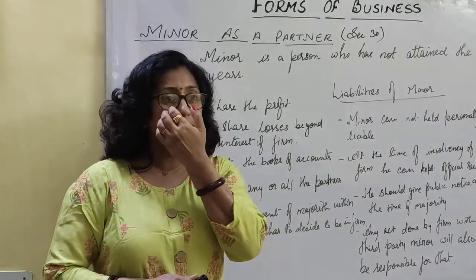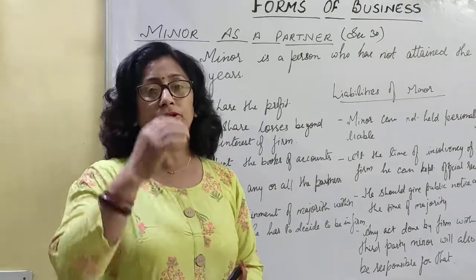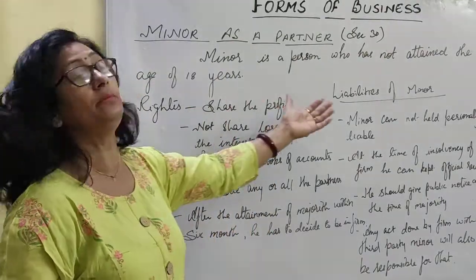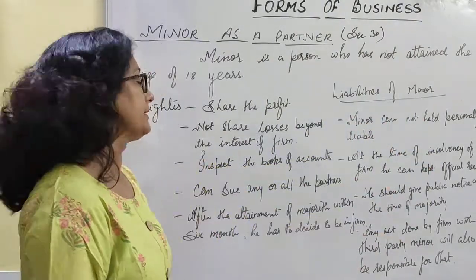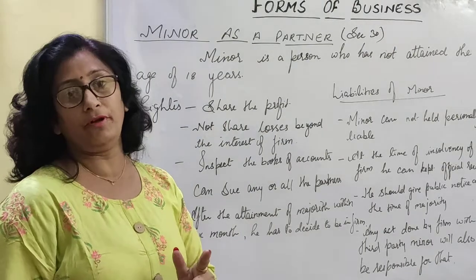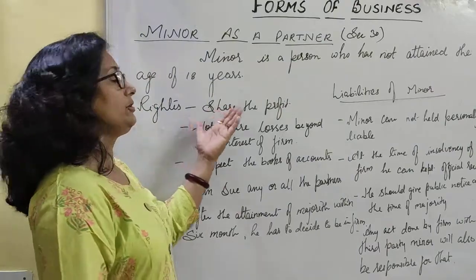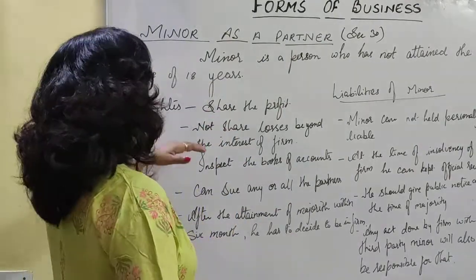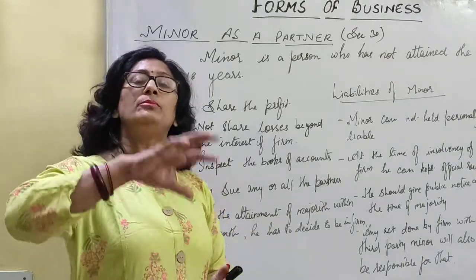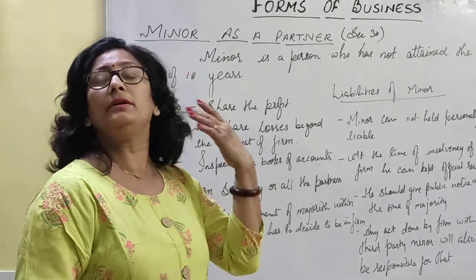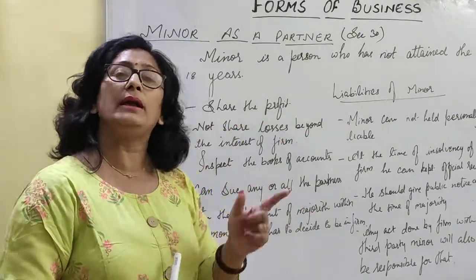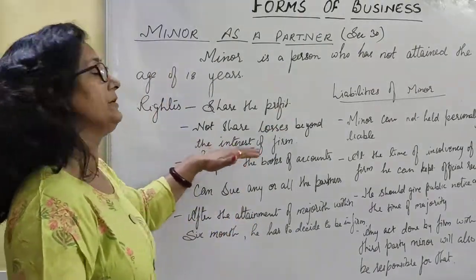As the minor is entering the firm, he is not sharing the losses of the organization; he just shares the profit. So, rights of minor: like other partners, he also has the right to share profit. As per the capital subscribed by the minor, he could share the profit as per the profit sharing ratio. He cannot share the losses beyond the interest of the firm, and his liability does not arise beyond what he has contributed — he will pay debts only up to the capital subscribed by him.